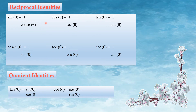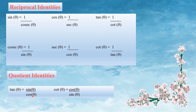These are reciprocal identities. sin theta equals 1 divided by cosec theta. cosec theta equals 1 divided by sin theta. cos theta equals 1 divided by sec theta. sec theta equals 1 divided by cos theta. tan theta equals sin theta divided by cos theta. cot theta equals cos theta divided by sin theta.